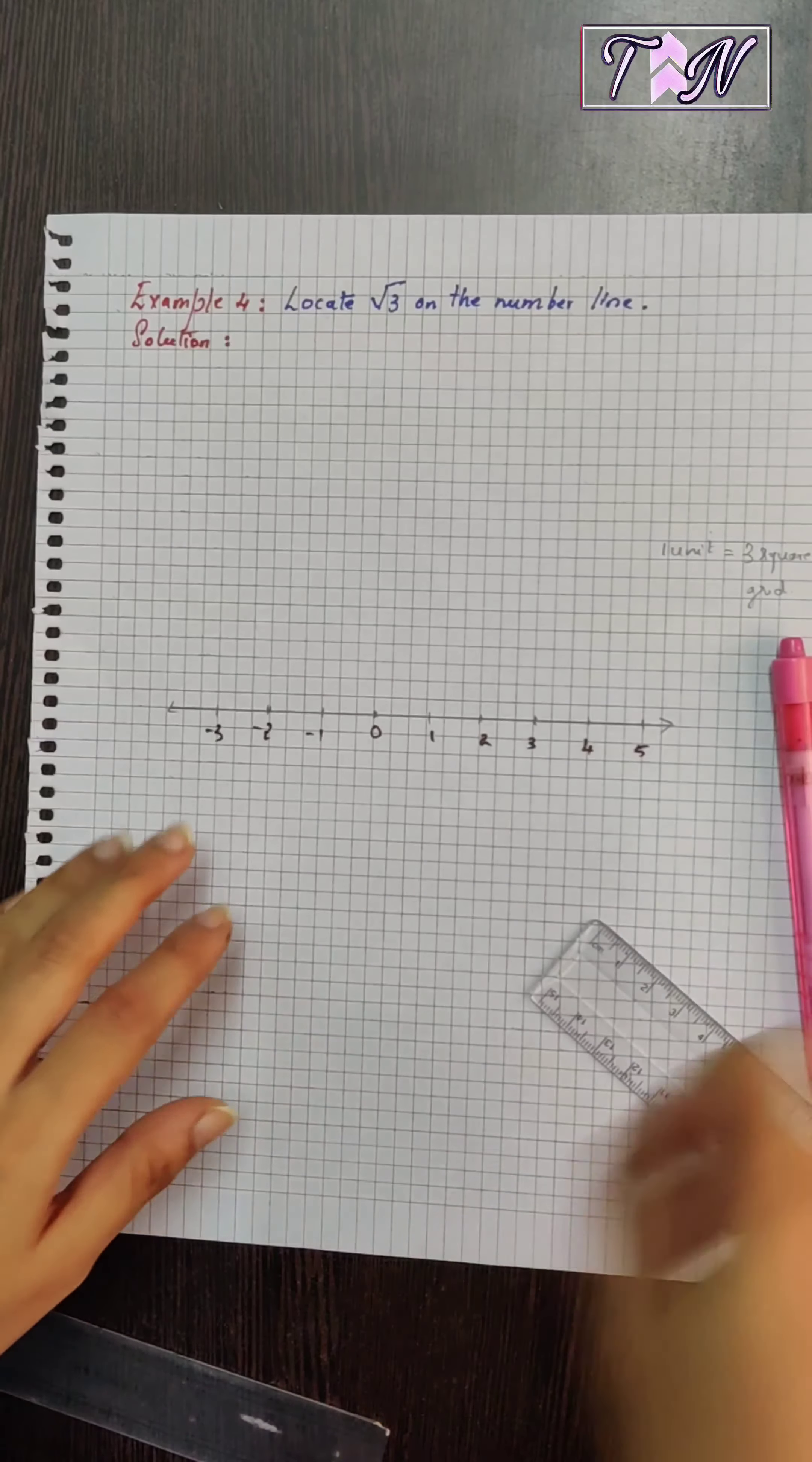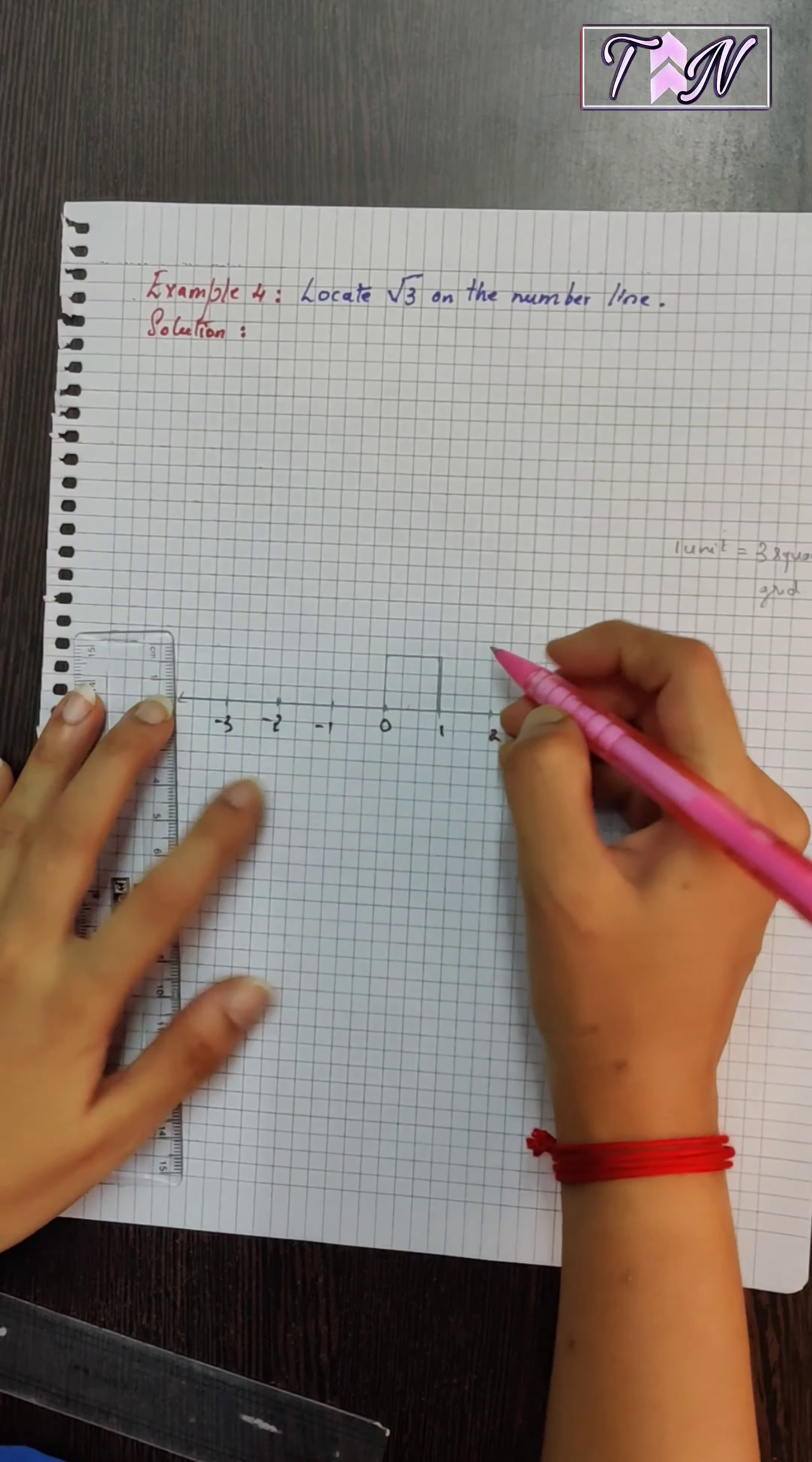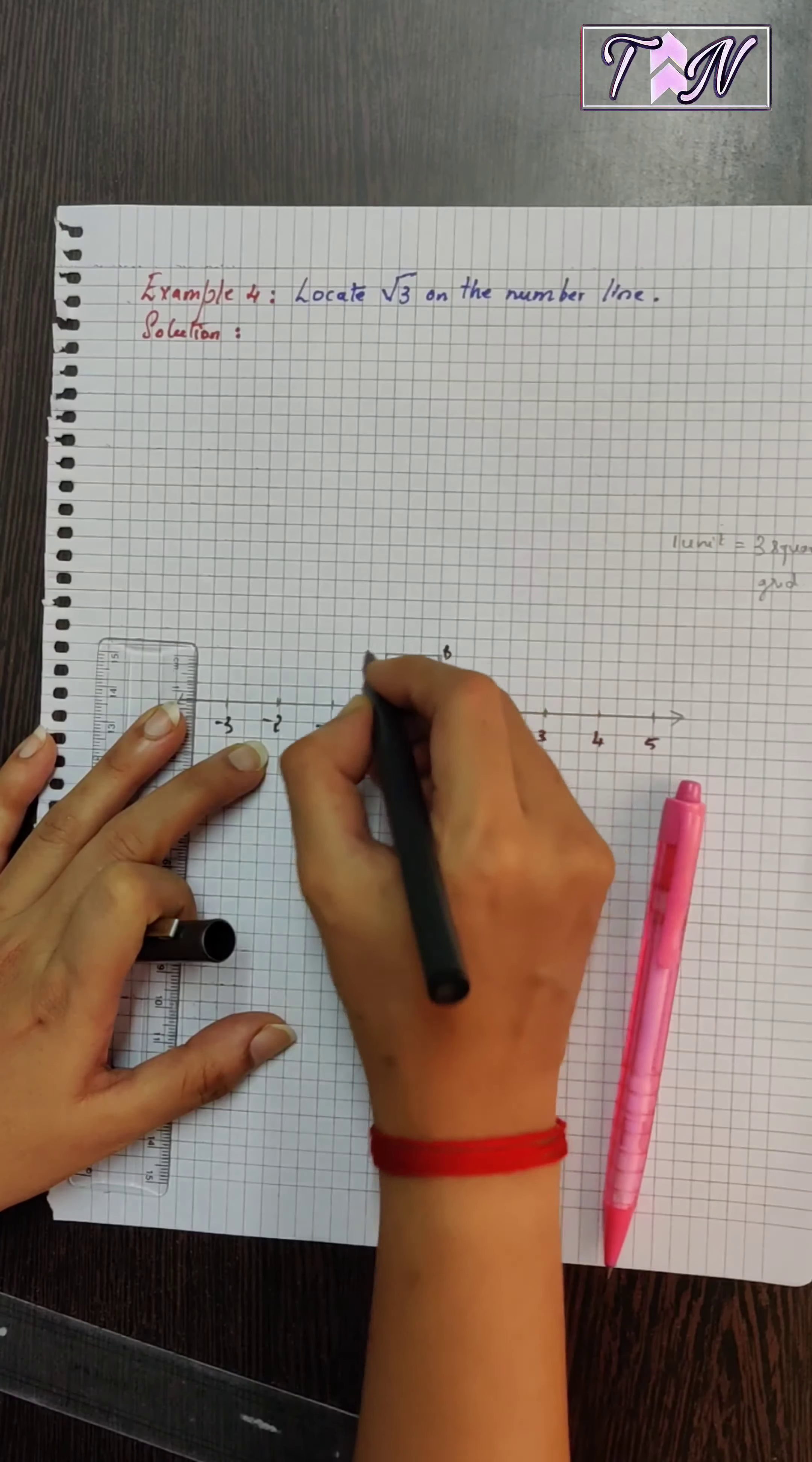So, I have to draw a unit square starting from 0. So, I am taking 3 square grids here. 1 unit, 1 unit, 1 unit and 1 unit. I will name it as O, A, B, C.